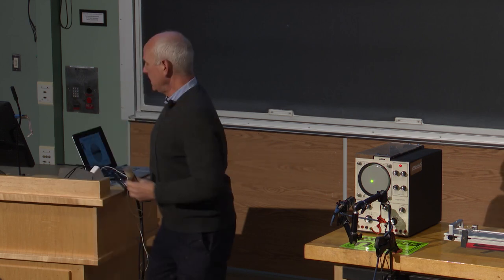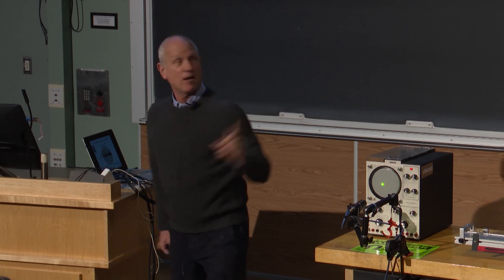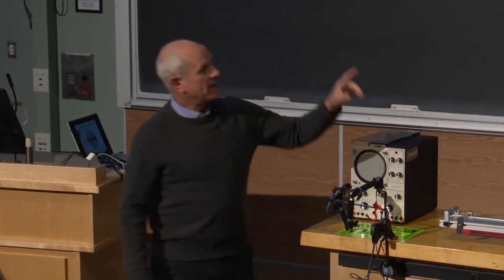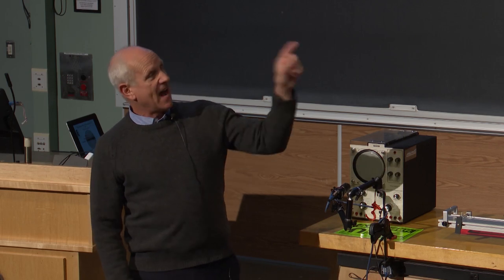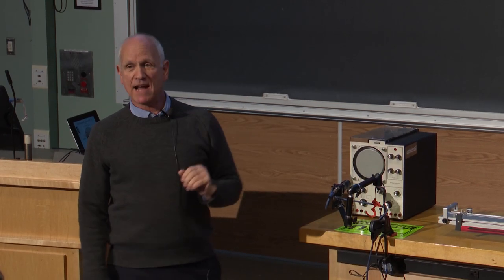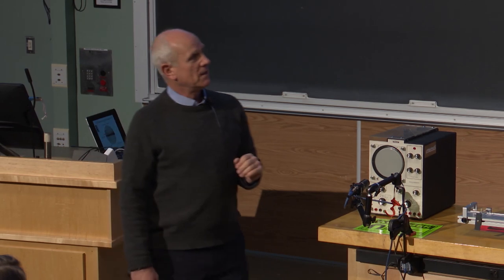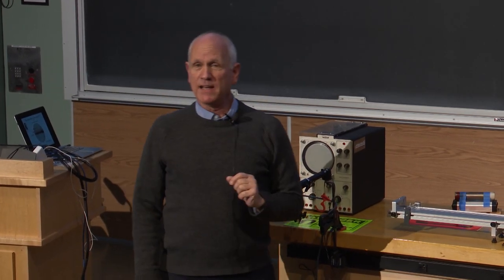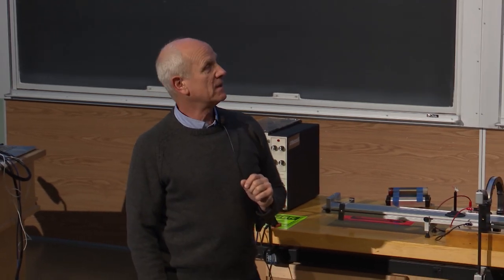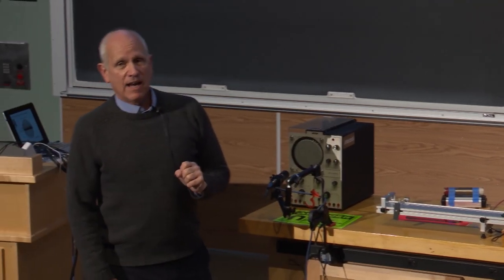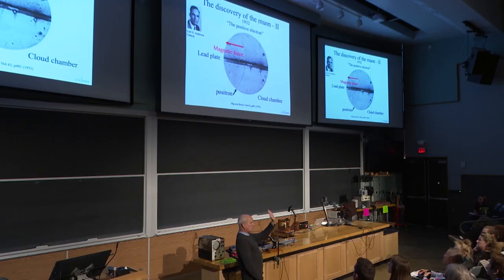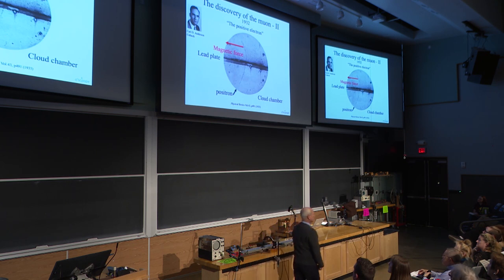So by looking at the direction that the particle was deflected by the magnetic force, that is the direction, the curve of that path is the direction that a positive charge would move. Moreover, that charge went through a lead plate, about a third of a centimeter, three and a half millimeters of lead. And can you see, can you tell that the curvature above is a little bit more, it's more curved than below? That means that the particle lost some energy in the lead.